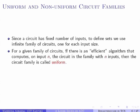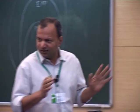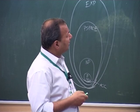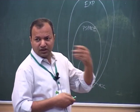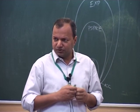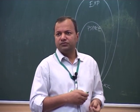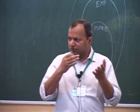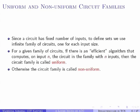There is this notion of uniformity. Given an infinite family of circuits, if there is an efficient algorithm which on input n produces the circuit in the family that works on n input bits, then the circuit family is called uniform. Otherwise the circuit family is called non-uniform. These two notions will be crucial in this talk.